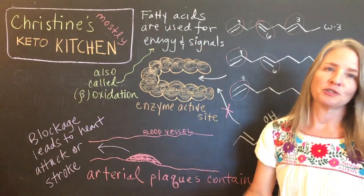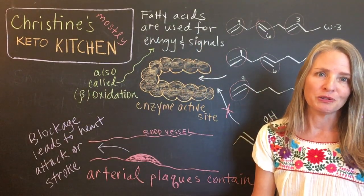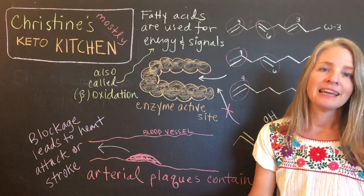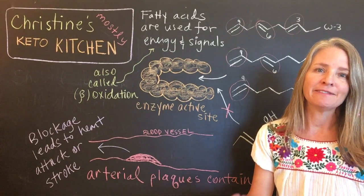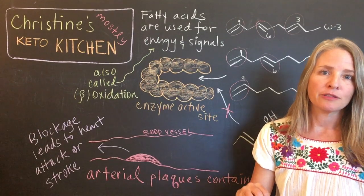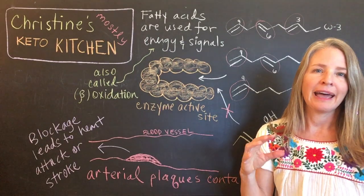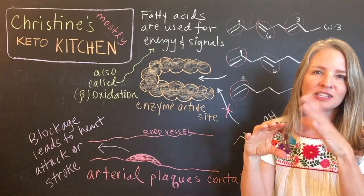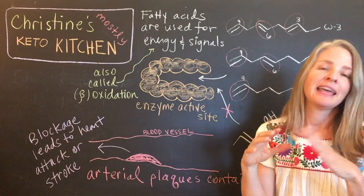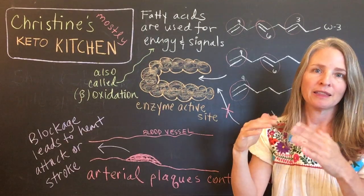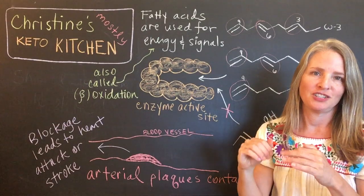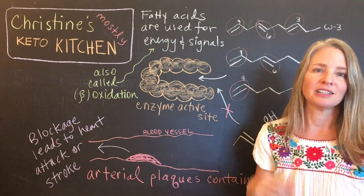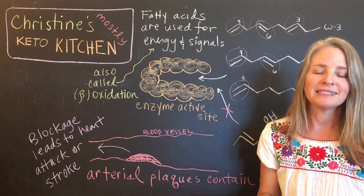Fatty acids can also be used as signaling molecules. We've talked before about how omega-6 fats can be signaling molecules in the inflammation pathways. And omega-3 fats seem to help prevent the omega-6s from getting into the active site, so there's more competition for the active site. That's why omega-3 fats seem to be good for diminishing inflammation — it helps to prevent more of the signaling through the omega-6 pathway.